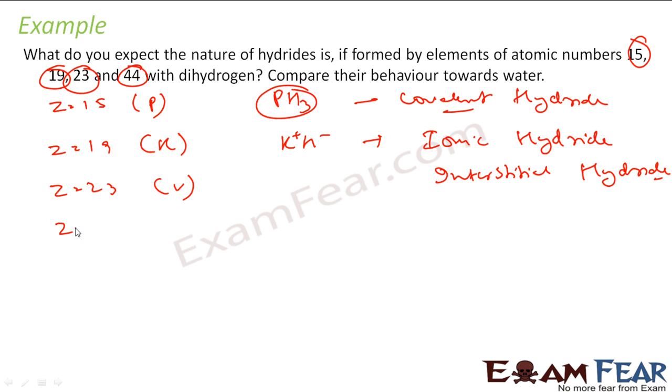44. Now this is a catch here. 44 is a transition metal element, but it is part of group 8. And I told that group 8 will not form any hydride. So there is no hydride.